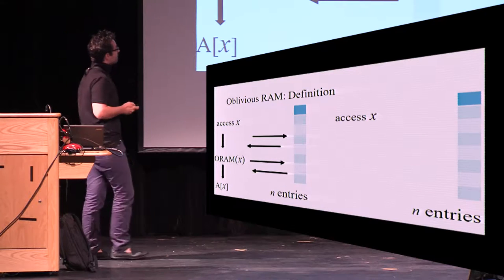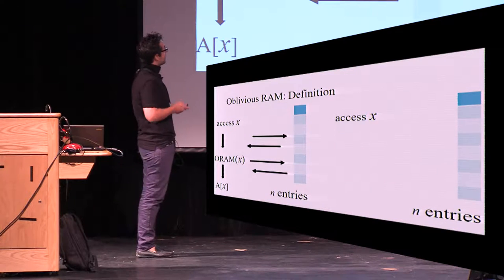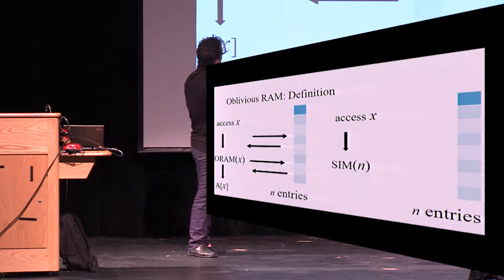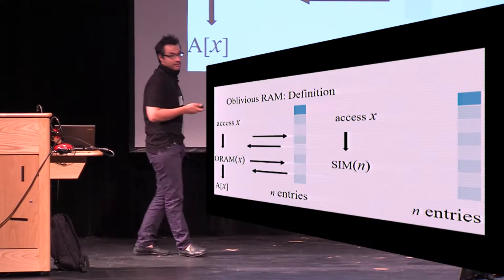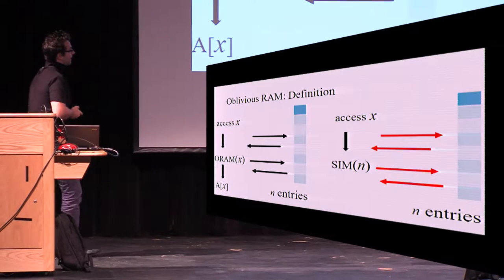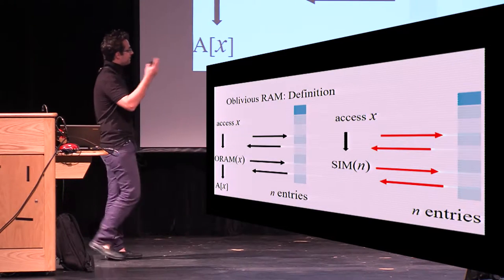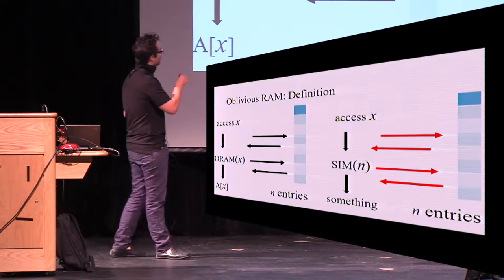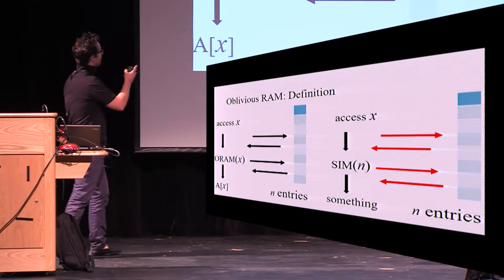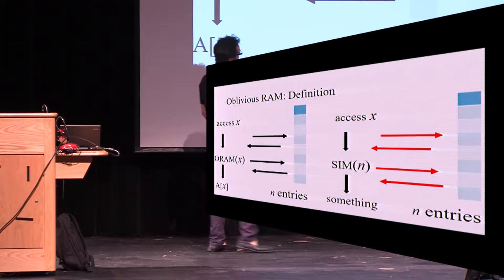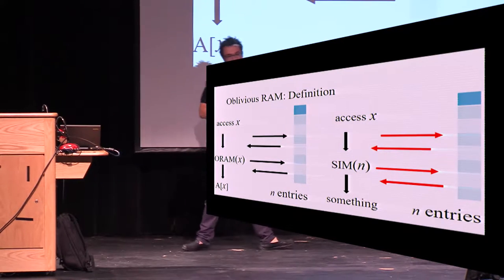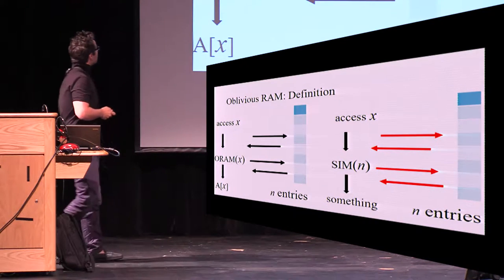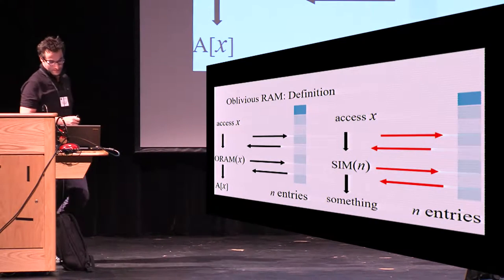In the ideal world, we again want to access x, but we don't give this x to the simulator. The simulator only gets to see the size of the array, and then performs some accesses in the array and outputs something. If the adversary observes both sets of accesses and cannot distinguish which world he is in, this is the informal definition of ORAM.